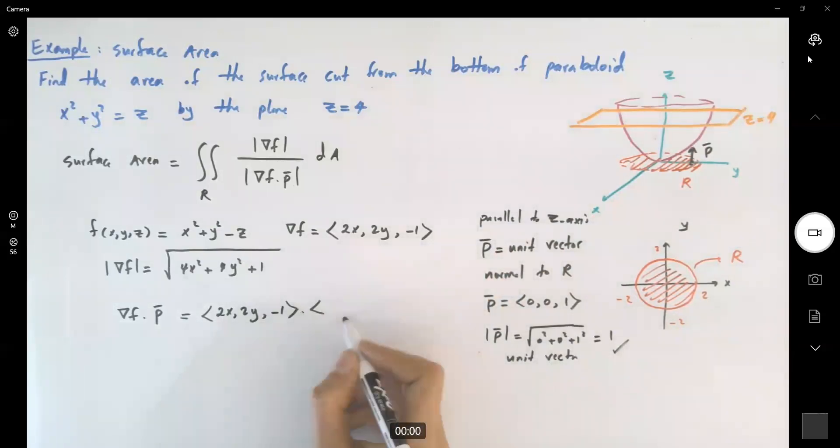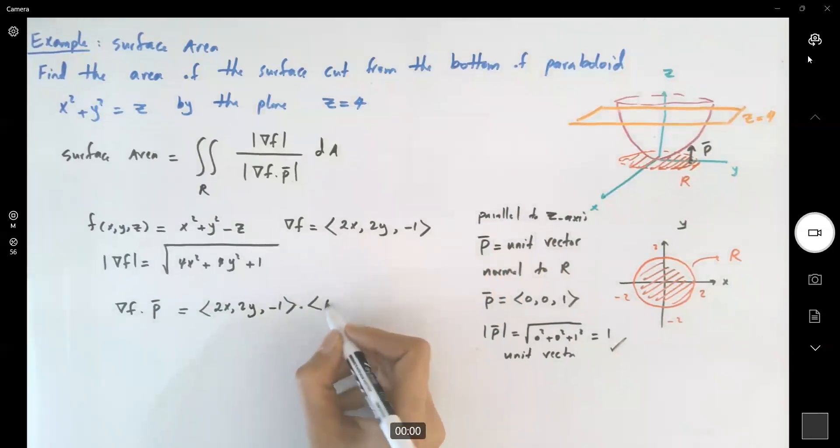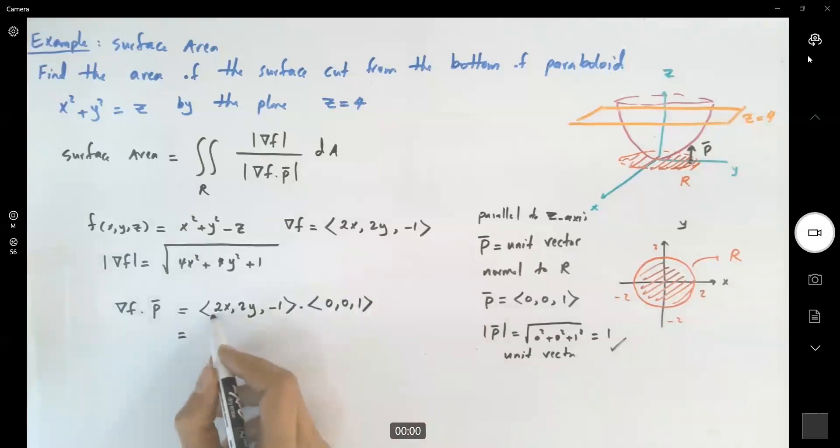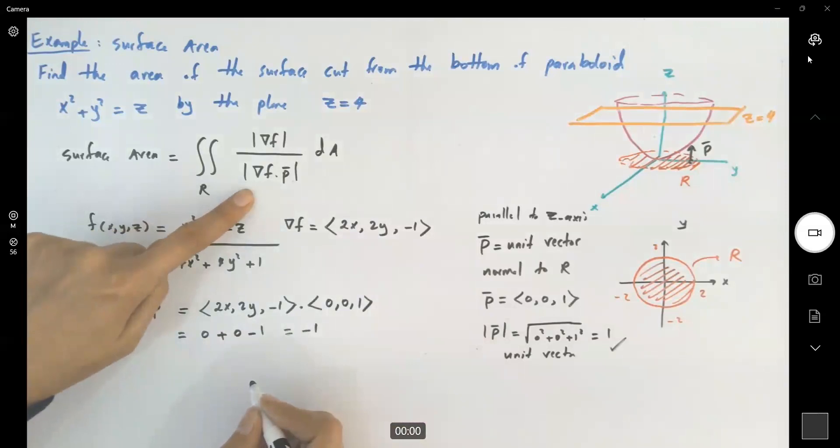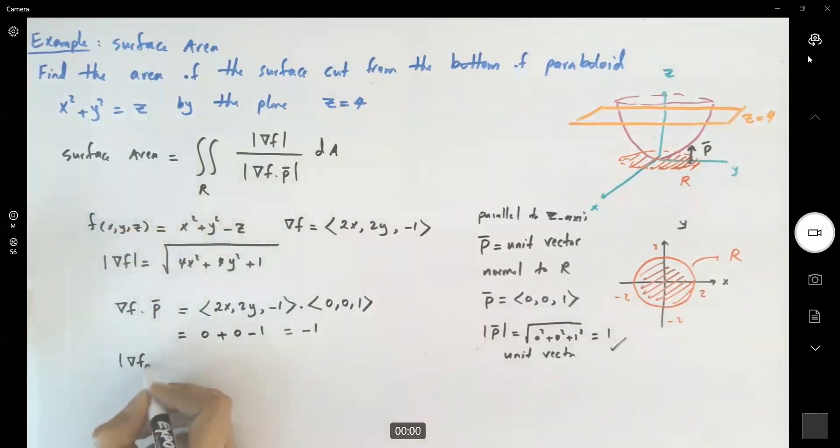So you're finding the dot product between the gradient of f and p, which is 0, 0, and 1. 2x times 0 is 0, 2y times 0 is 0, negative 1 times 1 is negative 1. So this guy is negative 1. But in the formula, we need to find the magnitude. So the magnitude of gradient of f dot p is equal to just 1. So we have all the information that we need.